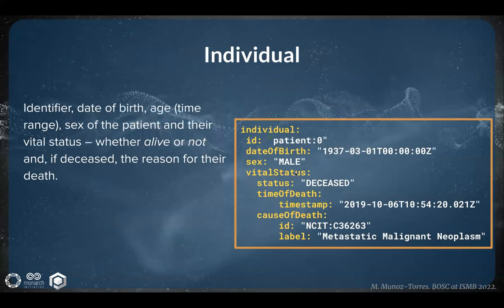First, I'll discuss the individual element. The individual contains information describing the patient — with an identifier, date of birth, the age measured as a time range, sex of the patient, their vital status whether they're alive or not, and a disease or the reason for their death. So this example represents an 86-year-old man who passed away from metastatic malignant neoplasm.